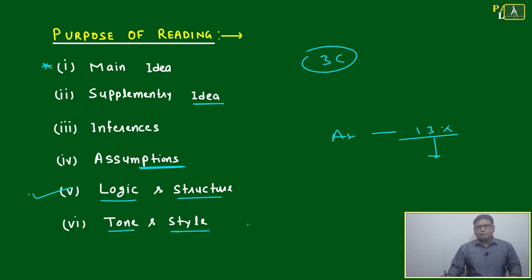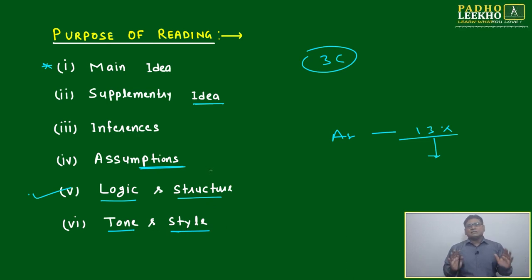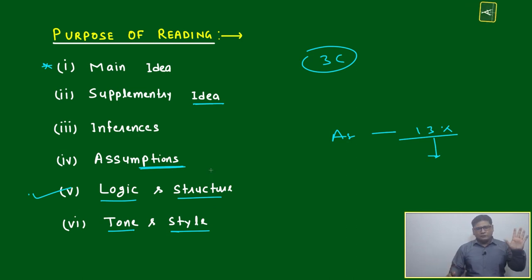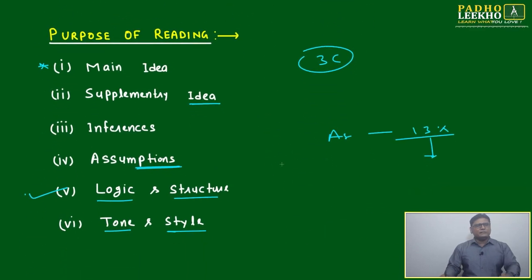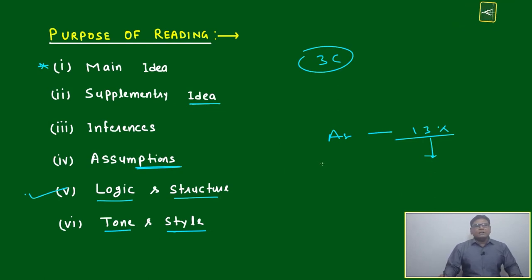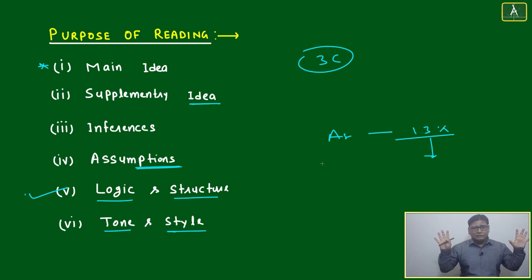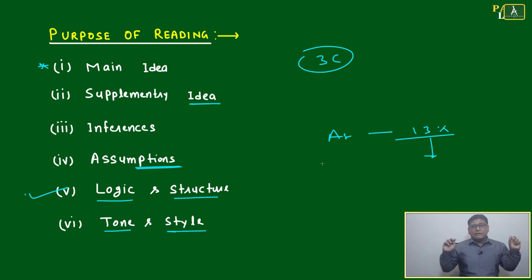Afterwards, depending on what the author wants and what type of author it is — tone and style. These six things: I request you to fit them in your brain and memorize them today. For LR also those five points, and for RC these six points. These are small things — no need to put stress, just look a few times and you will get it. Then, once you start reading the RC, your antenna will be these six: I have to search for the main idea, I have to search for supplementary ideas, inferences — wherever.